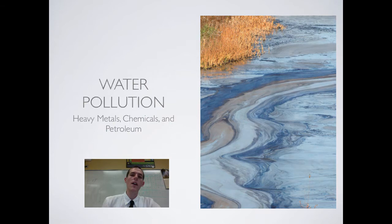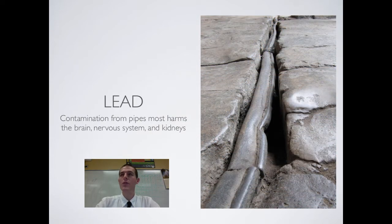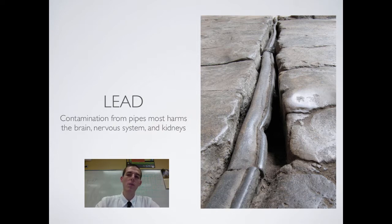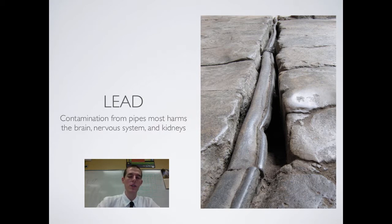Starting out with the heavy metals. First up, we've got lead. Lead is not generally naturally occurring in water, so if there's lead contamination, it's probably coming from lead pipes, pipe fittings, or the solder on those pipes. As far as what it does, it is a neurotoxin, so it harms the brain, the nervous system, and the kidneys, particularly of babies and older generations.